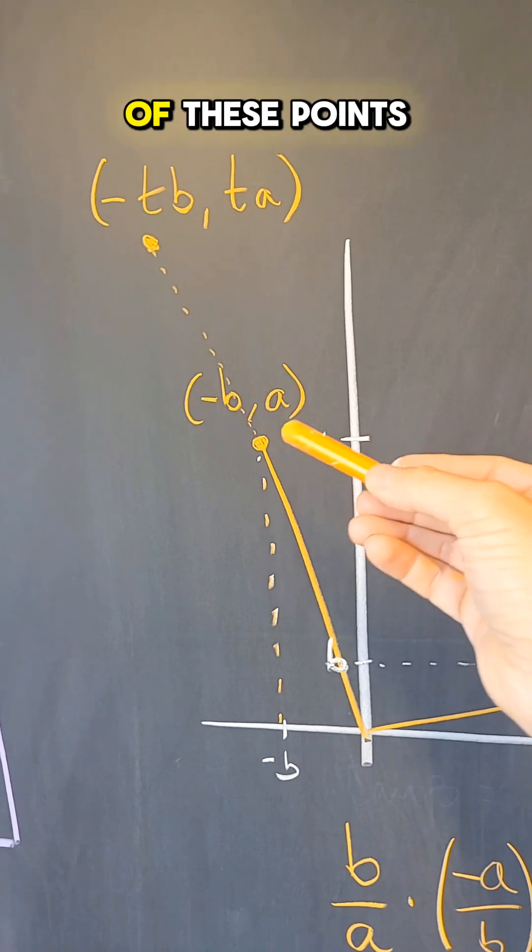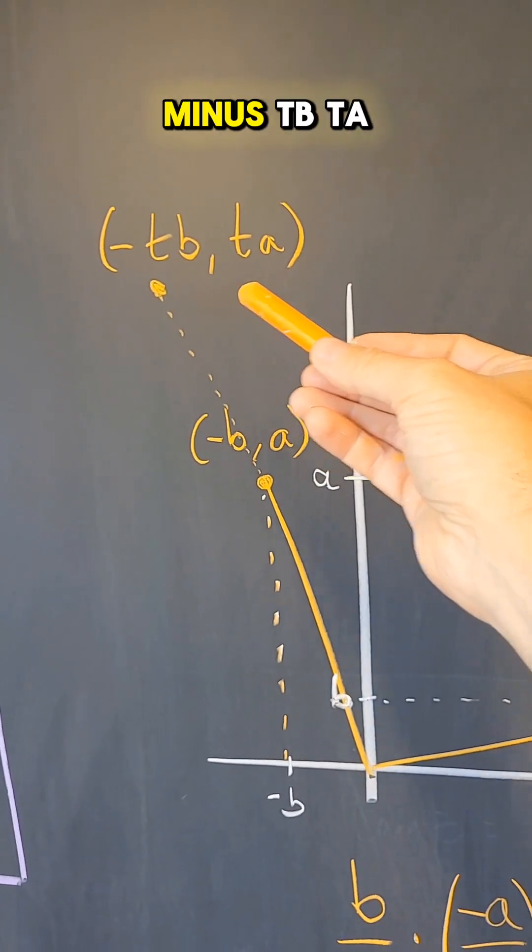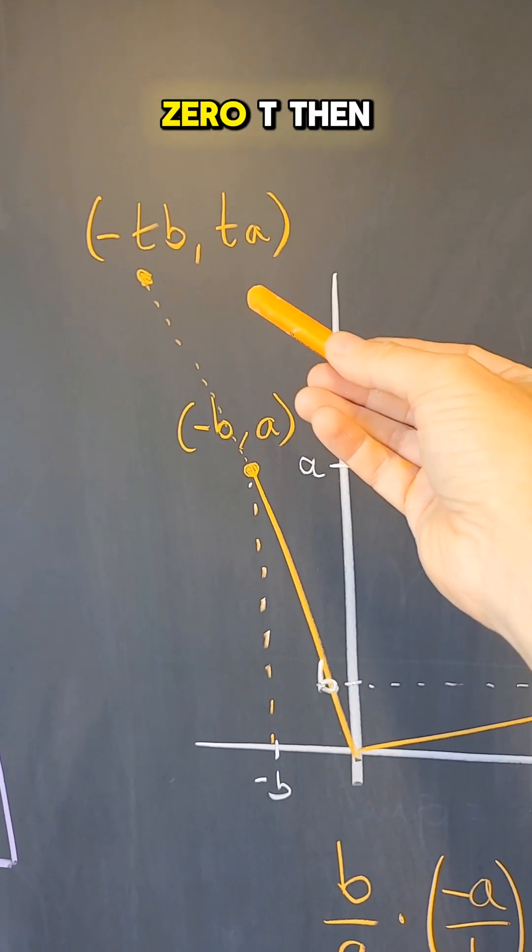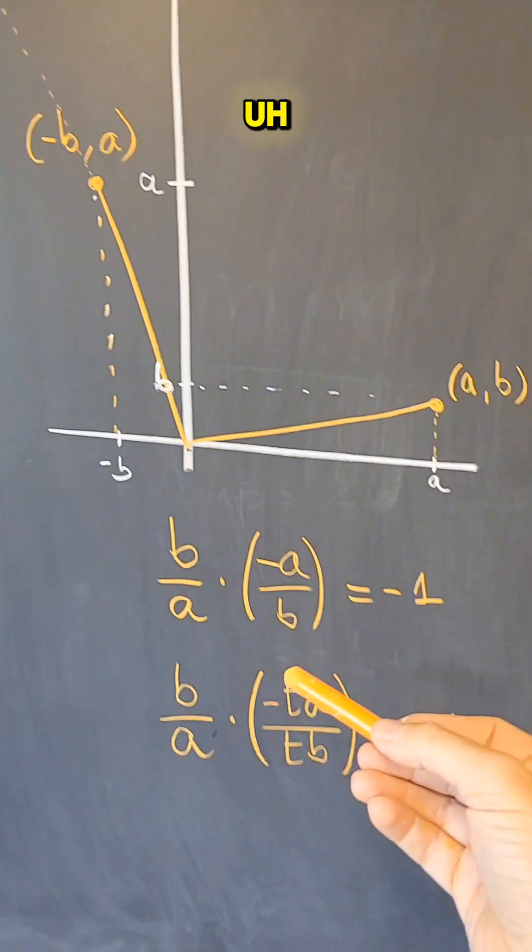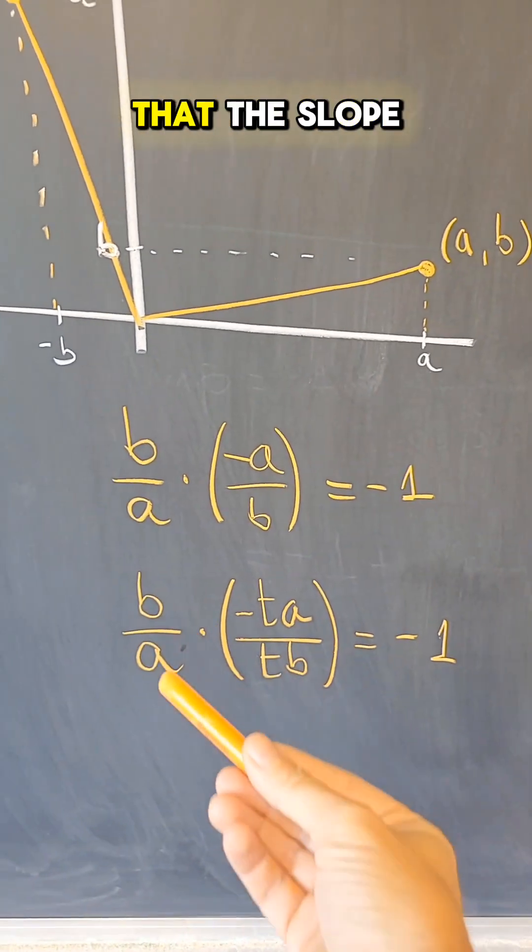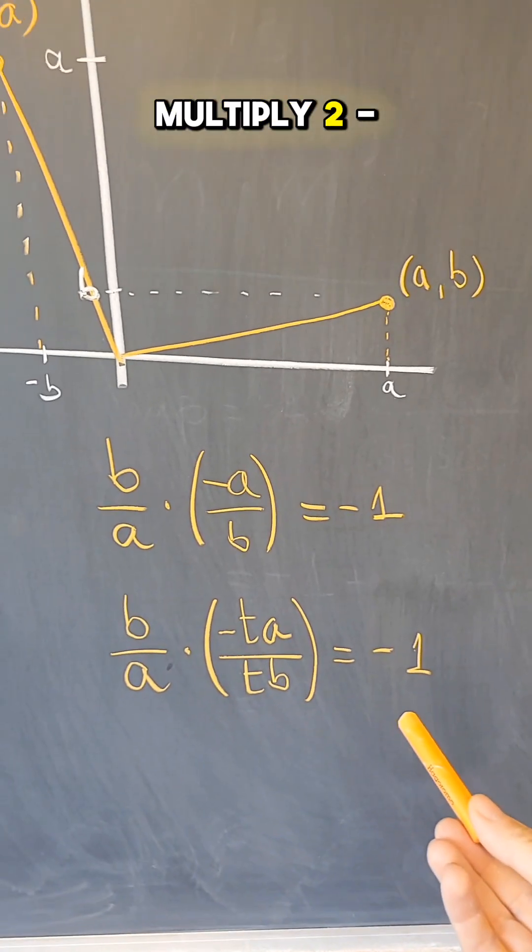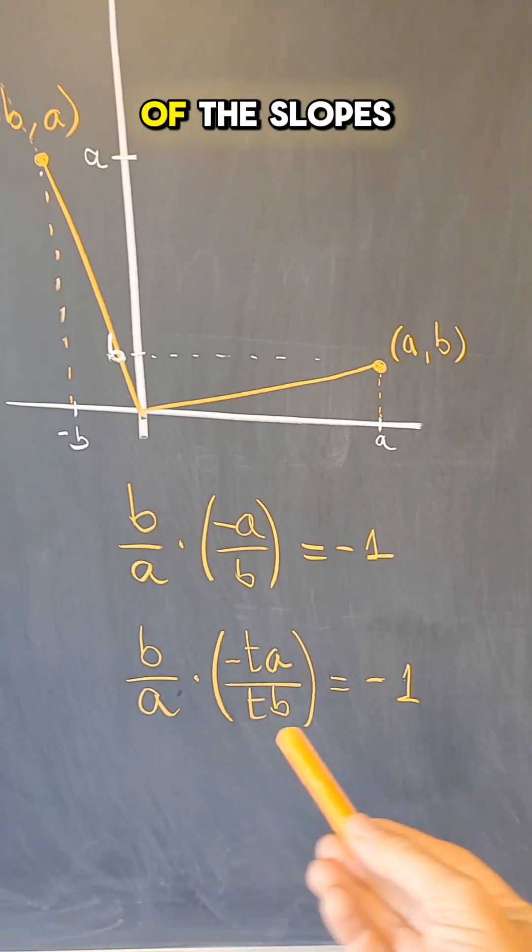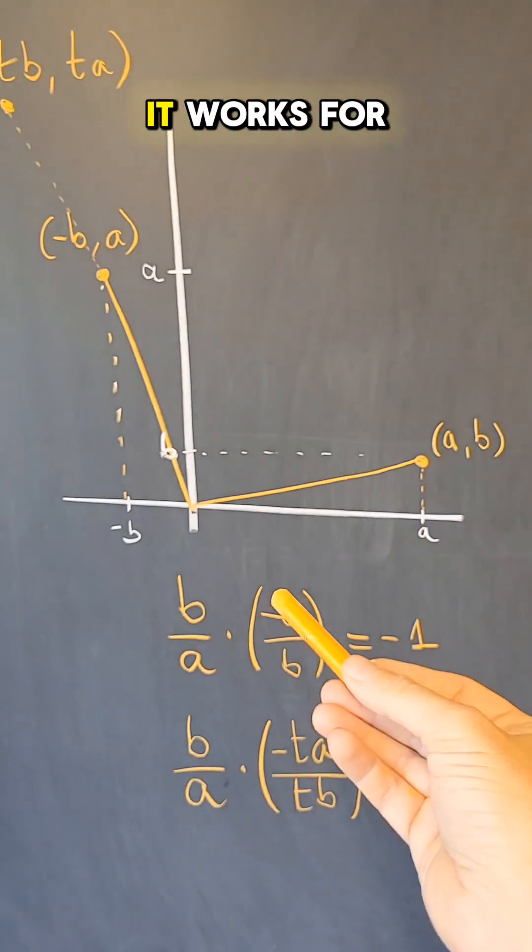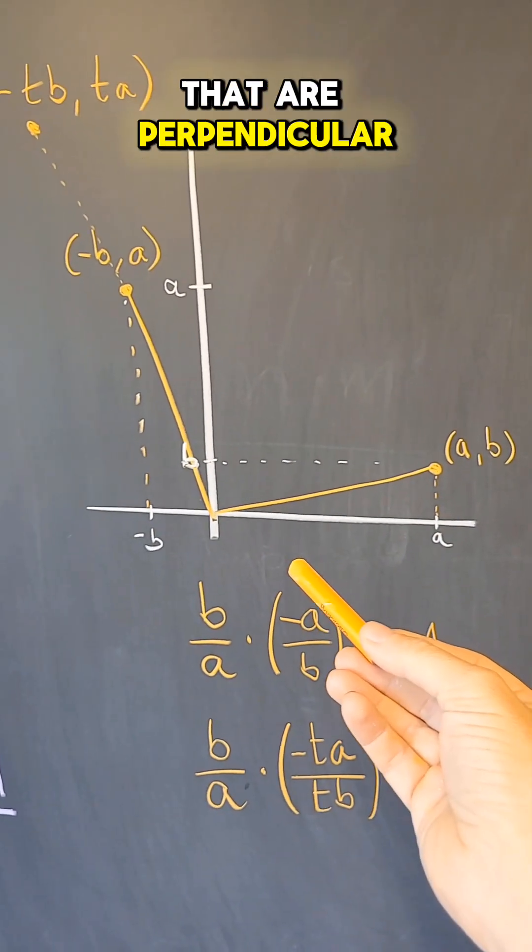If you put any other point on this line, which will be a multiple of these points, and it will be a point minus tb, ta for some non-zero t, then the slope satisfy the same property, that the slope of this line and the slope of the other segment multiply to minus 1. So that product of a slope being minus 1, it works for any two segments that are perpendicular.